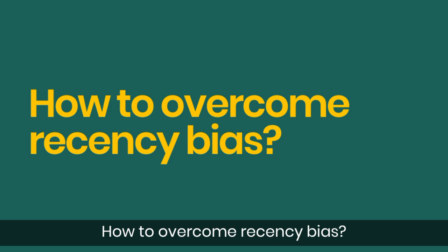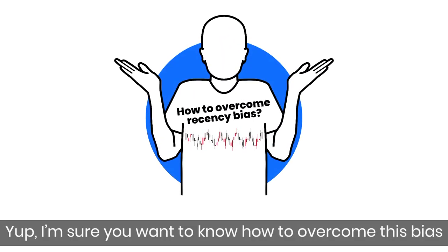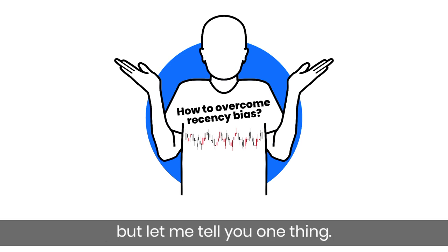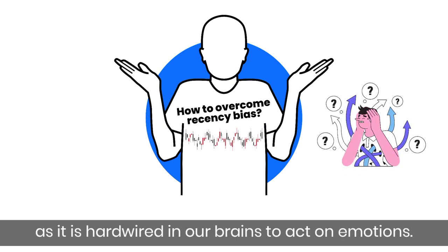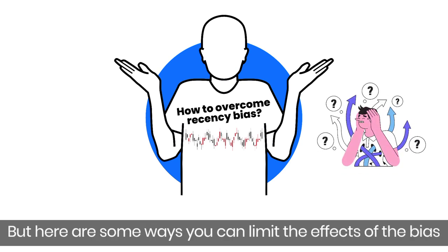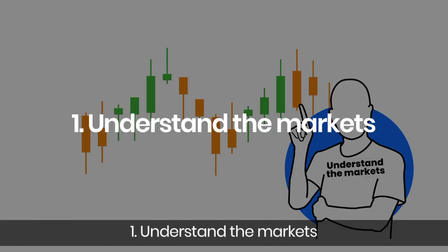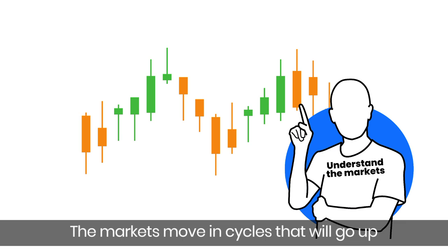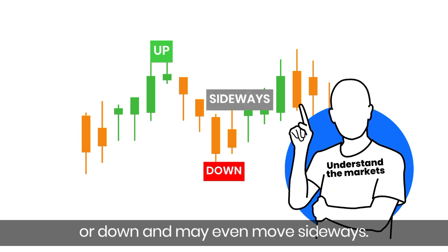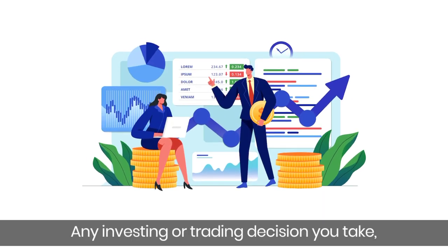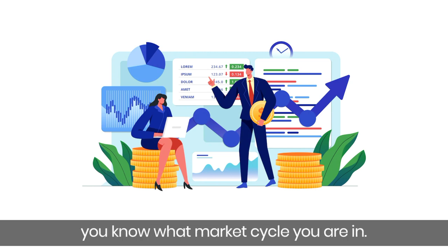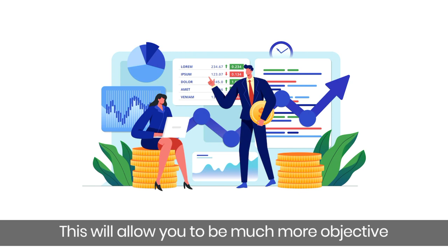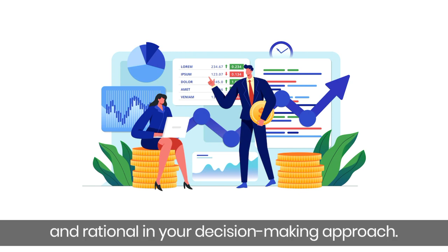How to overcome recency bias? We cannot completely overcome it as it is hardwired in our brain to act on emotions, but here are some ways you can limit the effect of the bias. First, understand the markets. The markets move in cycles that will go up or down and may even move sideways. Ensure that you make any investing or trading decision only after you know what market cycle you are in. This will allow you to be much more objective and rational in your decision-making approach.